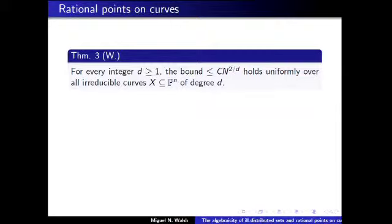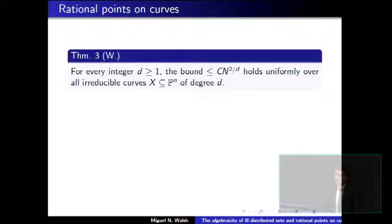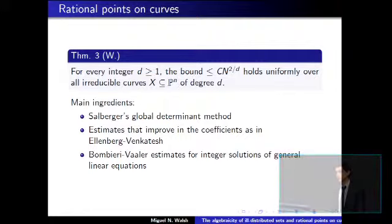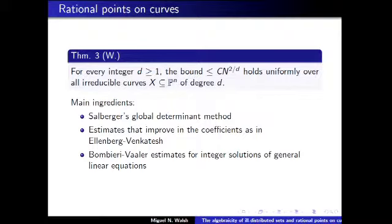Now we know this conjecture to be true: for every integer D, there exists a constant completely independent of the choice of curve such that no curve can have more than C times n to the 2/D points. The proof involves the kind of ideas I mentioned previously about using the distribution of your set in residue classes, but it also needs Salberger's global determinant method — an elaboration of the determinant methods of Bombieri-Pila and Heath-Brown — as well as estimates improving the coefficients used in the work of Helfgott and Venkatesh, and estimates by Bombieri and Pila about the number of integer solutions a general linear equation can have.